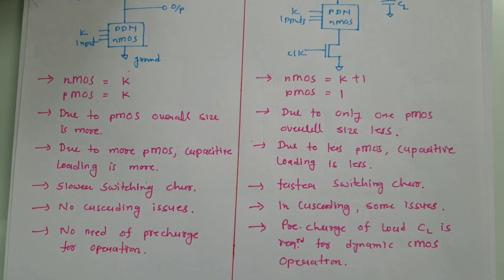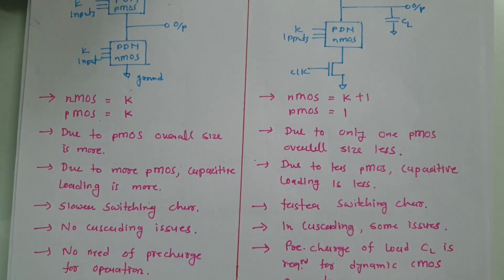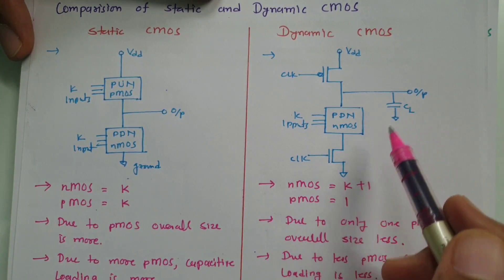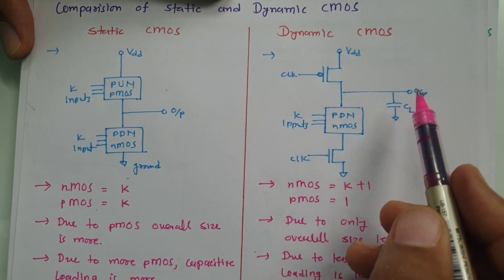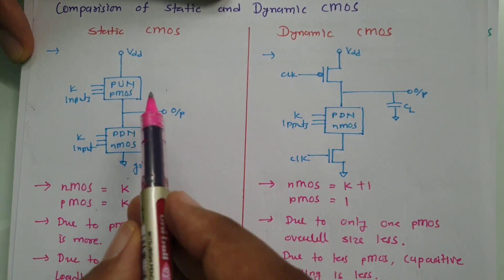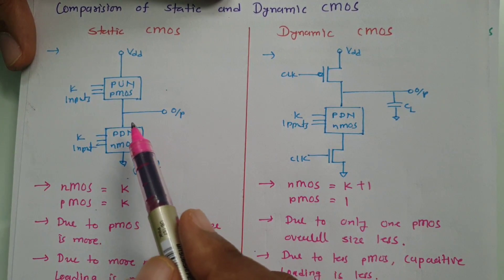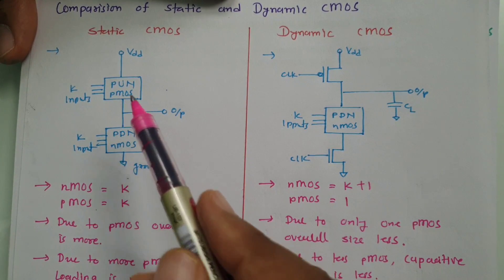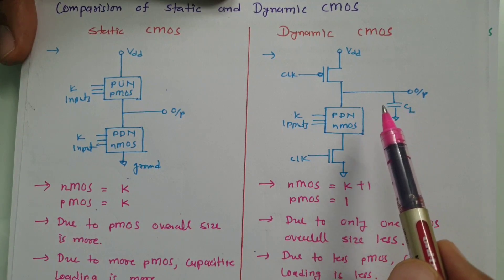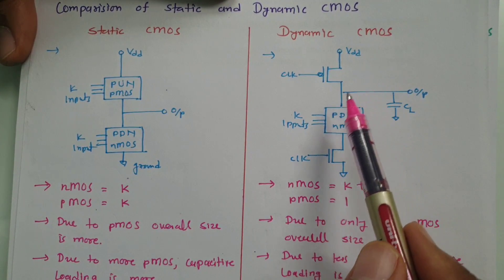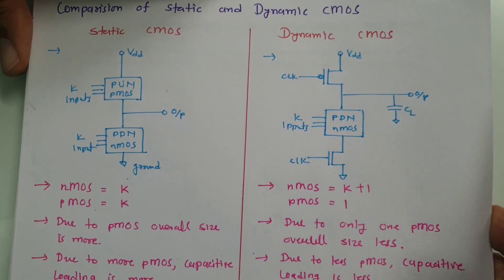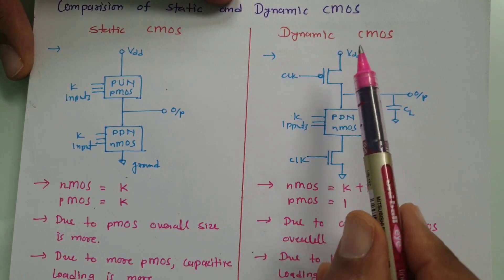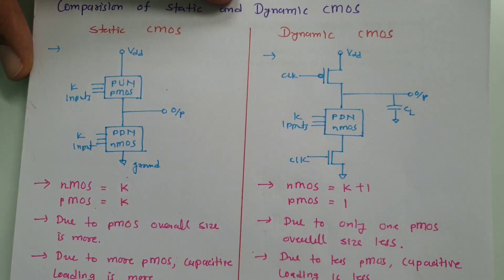As explained in previous videos on dynamic CMOS, when the output equals logic one, the output stays in high impedance mode. In static CMOS, when output equals logic one, it does not have a high impedance mode. Because of that, output logic one in dynamic CMOS is affected by noise to a larger extent, so noise immunity is lower in dynamic CMOS compared to static CMOS.